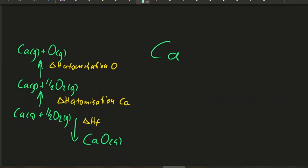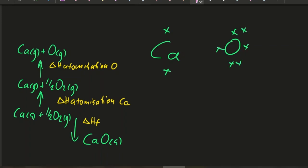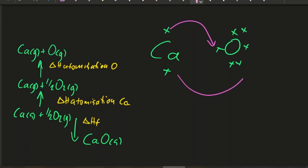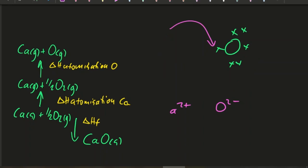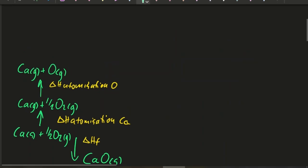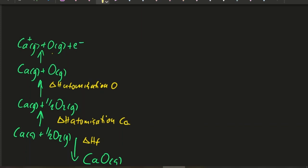Calcium is in group two with two valence electrons and oxygen is in group 16 with six valence electrons. Calcium is going to drop off two electrons to the oxygen to make Ca²⁺ and the oxide ion, and they're going to electrostatically attract and form an ionic bond. So I'm going to rip off two electrons from the calcium, one at a time. I'll make calcium⁺ gas with oxygen gas — don't forget to include that electron. That's the first ionization energy of calcium.